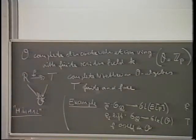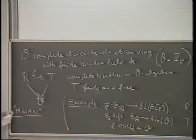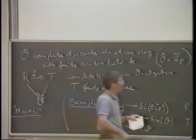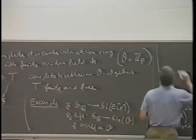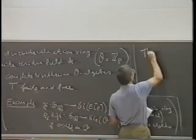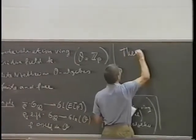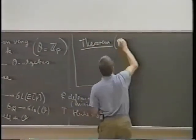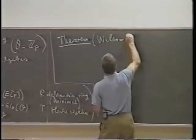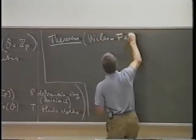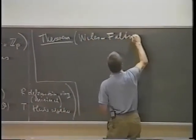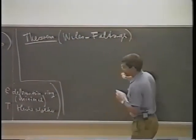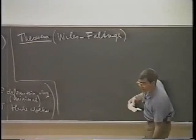That is what the criterion is about. So, theorem — it is due to Wiles and improved by Faltings.